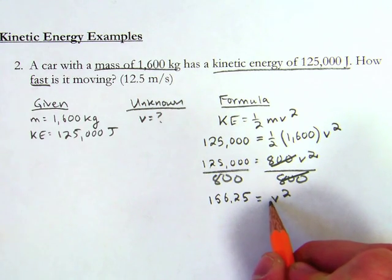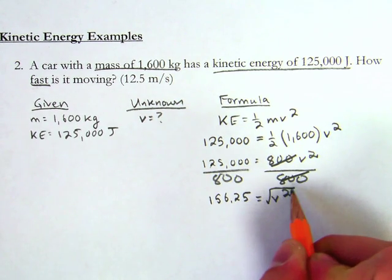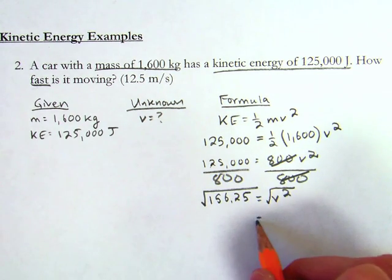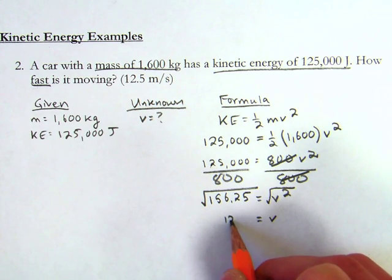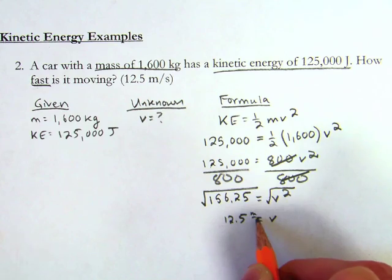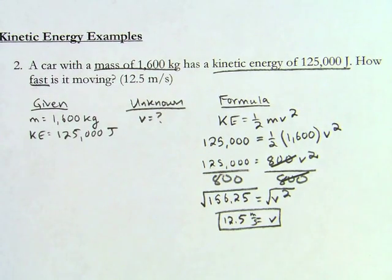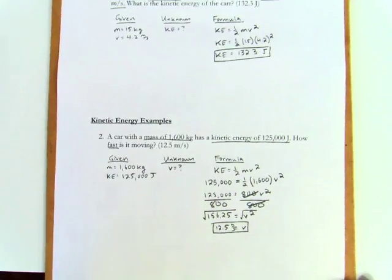I just take the square root to get rid of that square of both sides, and I'm left with v equals, yep, I got it, 12.5 meters per second, which is velocity. And that is two examples of how to apply the kinetic energy formula.